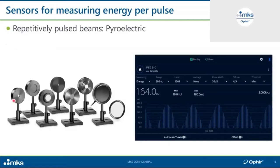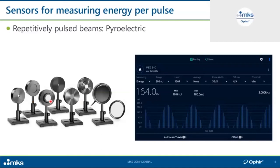For measuring energy per pulse, thermal sensors are unsuitable because their physical time constant is on the order of seconds — they can't respond fast enough to individual pulses. Instead, we use sensors typically based on pyroelectric crystals, which can measure every pulse at rates up to 25 kHz in Ophir's case. Here you see small and large pyroelectric sensors with different absorber types, some with built-in or removable diffusers, and various aperture sizes. A pulse chart example is shown on one of our meters.